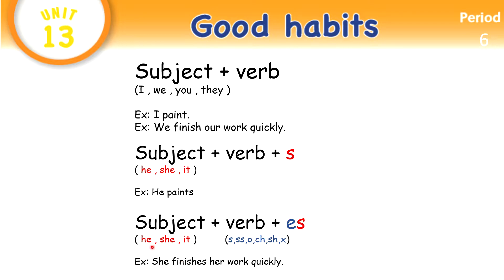When the subject is also singular — he, she, or it — and the verb ends with one of the following letters: S, SS, O, CH, SH, or X, we add ES. For example: she finishes her work quickly.